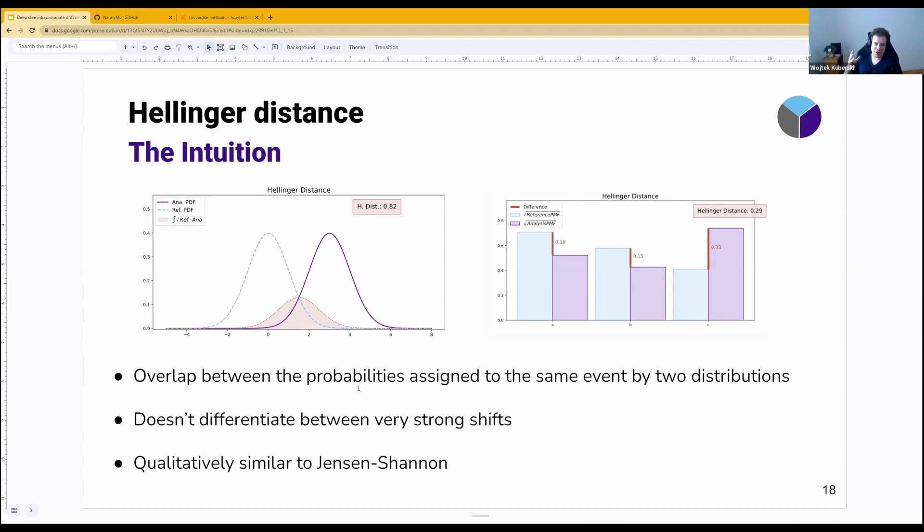As the overlap increases, the measure is going to increase. We've seen the Hellinger divergence, or part of the formula, is just the integral of the square root of one multiplied by the other, which is literally just overlap between the probabilities.